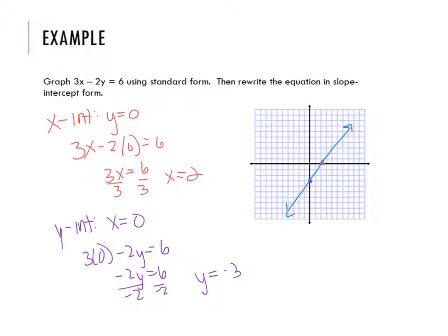Now, it does say to rewrite the equation in slope-intercept form. You can do it one of two ways. You can take your original standard form and rearrange it, which would be a-okay. Or you might notice, hey, I now have my y-intercept. So if I want slope-intercept form, I need a y-intercept, which was negative 3. Right? And I need a slope.